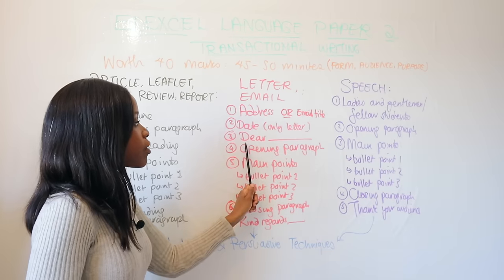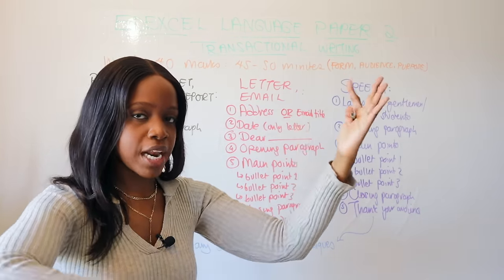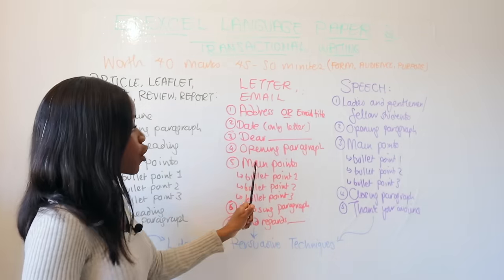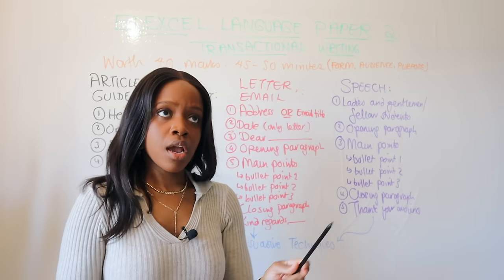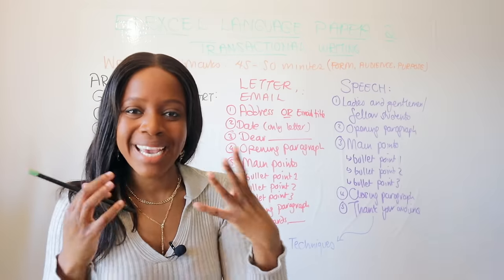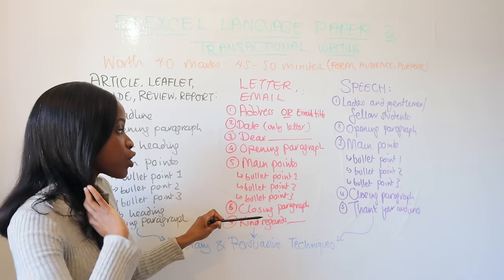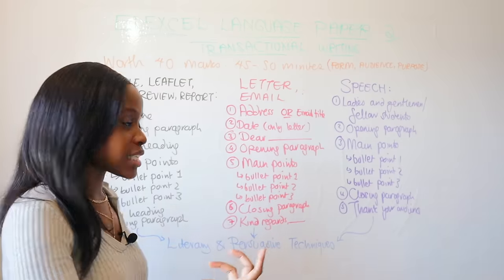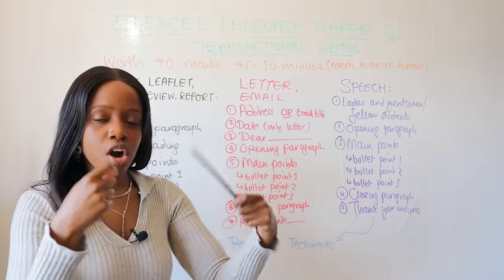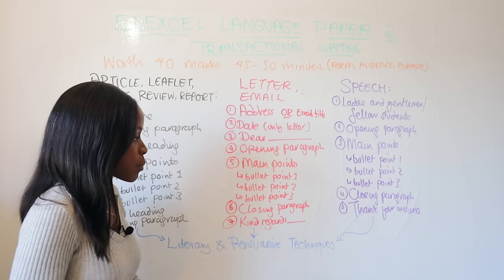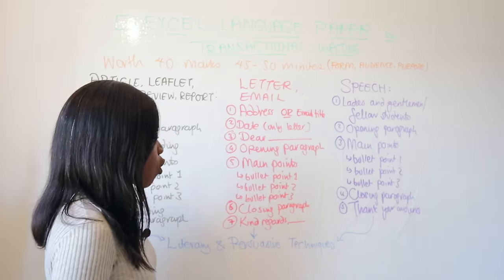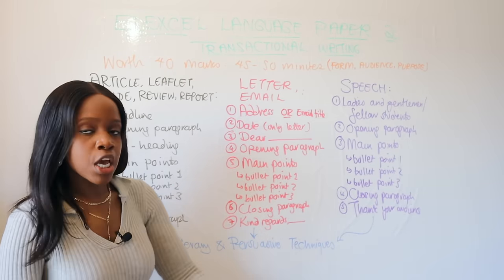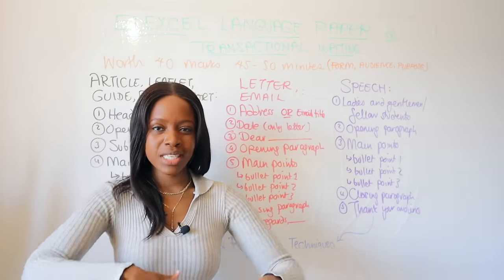For both a letter and an email, address the person receiving it: 'Dear whoever.' Then go into your opening paragraph — introduce the issue and make it really interesting. Don't say 'in this letter I will talk about' — it's boring. Your main body paragraphs are guided by the bullet points: bullet point one, two, and three lead your three body paragraphs. Then add a closing paragraph and finish by signing off with 'Kind regards, your name and surname' or 'Yours sincerely.' I personally prefer 'Kind regards' because it's easy to spell.